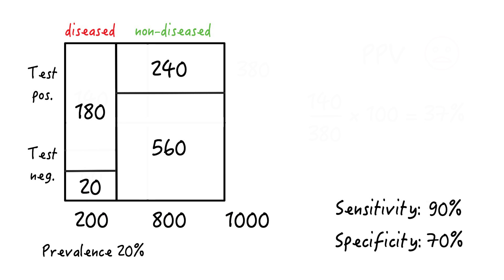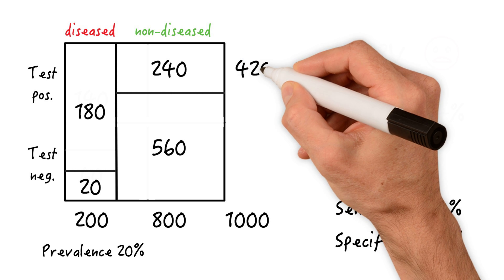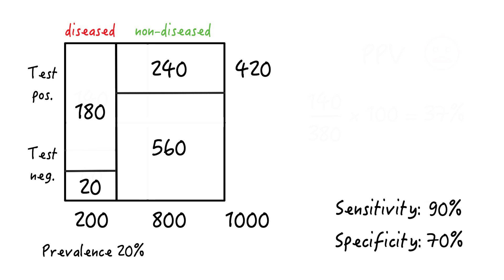Nothing changes on the right side since specificity stays the same at 70%. So overall, we end up with 420 people who test positive. What's the positive predictive value? Maybe you want to give it a try and calculate it yourself. Pause the video and come back when you're done.